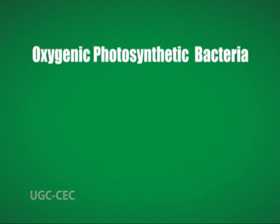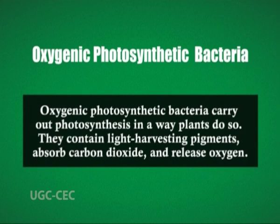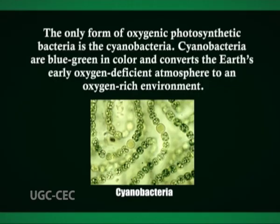Oxygenic photosynthetic bacteria carry out photosynthesis in the way plants do. They contain light harvesting pigments, absorb carbon dioxide, and release oxygen. The only form of oxygenic photosynthetic bacteria is the cyanobacteria. Cyanobacteria are blue-green in color and converted the earth's early oxygen-deficient atmosphere to an oxygen-rich environment. These bacteria are mostly found in water but can survive on land, in rocks, and even in animal shells and in coral.